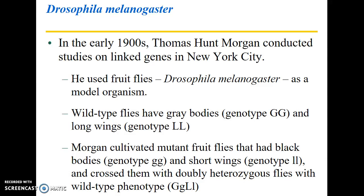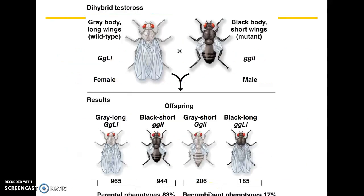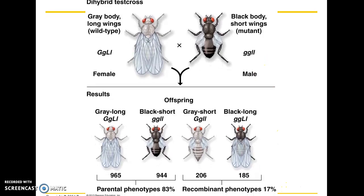Doubly heterozygous means heterozygous at both loci — the locus for body color and the locus for wing length. Morgan crossed the mutant fruit flies with these doubly heterozygous flies in a dihybrid test cross. Here we have the black body, short wing fly crossed with the gray body, long wing wild type fly. In the offspring, the overwhelming majority have the parental phenotypes, but a small number have recombinant phenotypes.